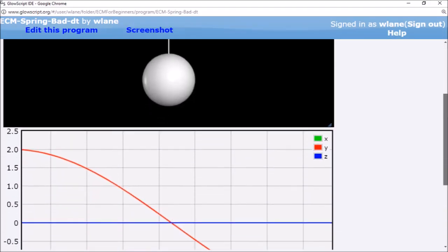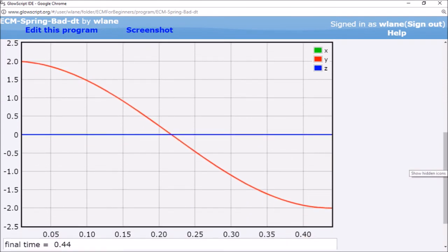Using this step size produces a much smoother graph, and note that it results in a greater value for total time. This result definitely looks more accurate, but how do we know it's good enough?